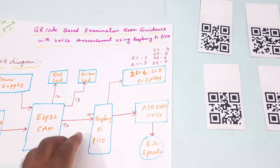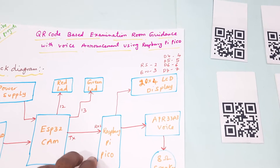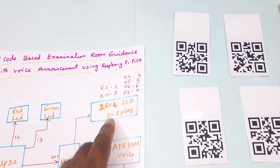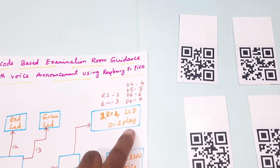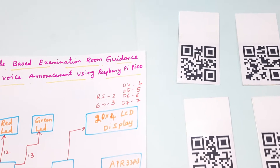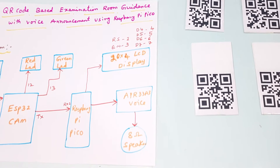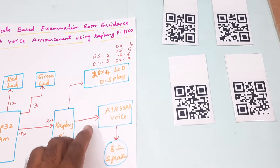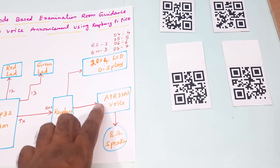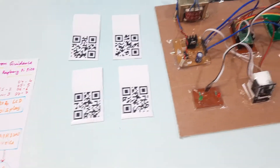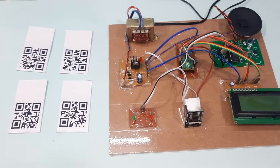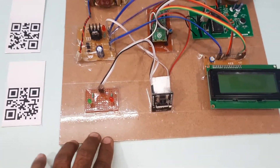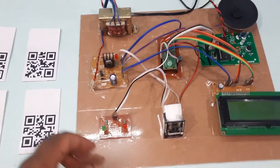There are two serial communications available on the Pico, so it is connected to Serial 2. The data is sent to a 20x4 LCD display with pins RS, EN, D4, D5, D6, D7 on pins two through seven, using all four lines on pins 18, 19, and 20. We are also using an APR333 voice module and an 8-ohm speaker, along with the Raspberry Pi Pico module, ESP32 camera module, and power supply.